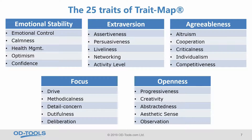TradeMap measures five traits in each of the Big Five super dimensions. If you've used many tools, you will recognize most of our traits as familiar. At the same time, we also have some truly innovative traits like health management and observation — the latter referring to sensitivity to non-verbal communication — which are very unique and innovative traits.